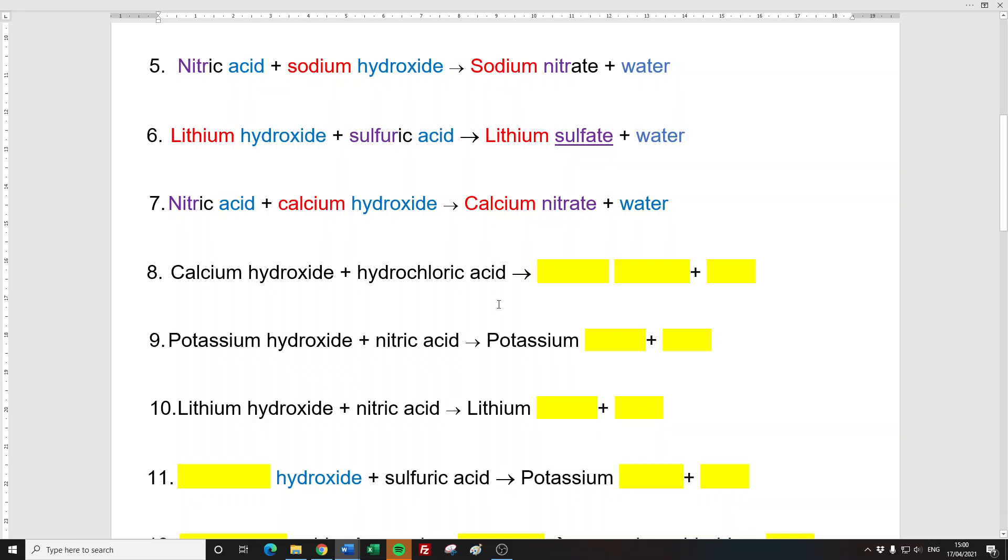Calcium hydroxide. Okay, so I've taken all the colors off, but it just works in the same way. Calcium is your metal and your acid, hydrochloric. So that is going to be calcium chloride. And the other thing we always get, we know, is always water.